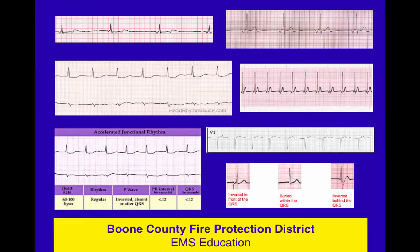Sometimes the junction gets a little out of control — that's where the accelerated junctional rhythm comes from. For some reason that AV node and AV junction are firing sooner than they should, and you get that accelerated junctional rhythm.